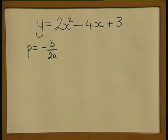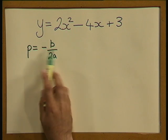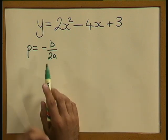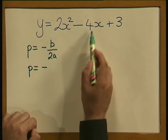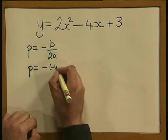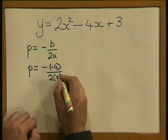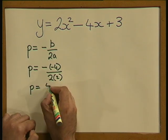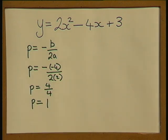To sketch this graph we need to find the turning point. The turning point is pq, and we can calculate p with this formula: p is equal to negative b divided by 2a. Substituting our values, b is negative 4 and a is 2, so p is equal to 4 over 4, therefore p is equal to 1.